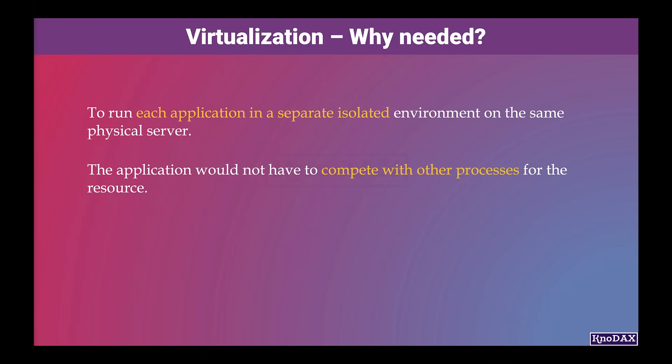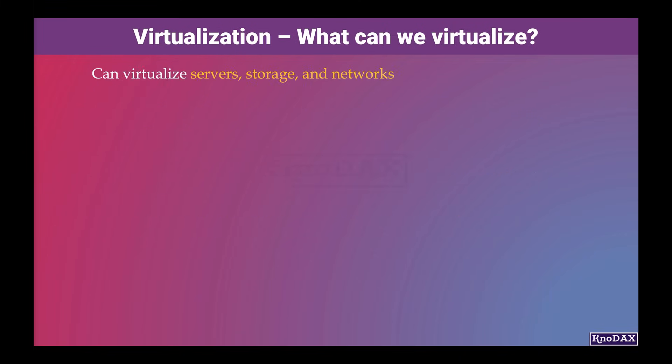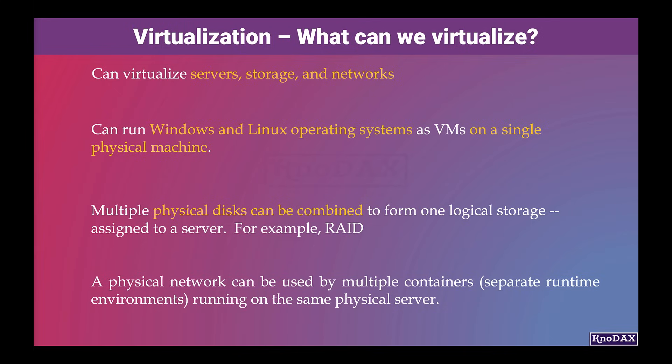Virtualization essentially creates virtual computer systems. We can virtualize servers, storage, and networks — these hardware constructs can be created in software form as well, using virtualization. Using virtualization, we can run multiple servers on the same physical server. These virtual servers are called virtual machines, or VMs. For example, we can run Windows and Linux operating systems as virtual machines — two entirely different environments on a single physical machine.